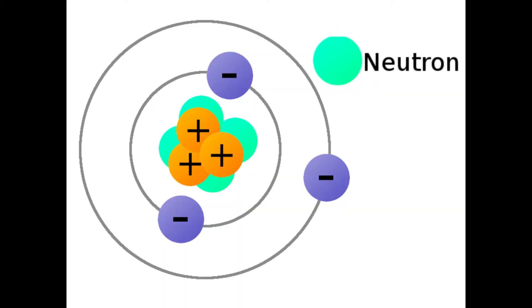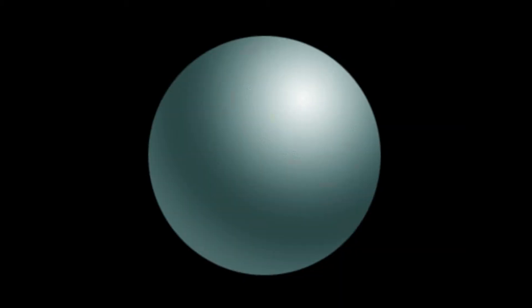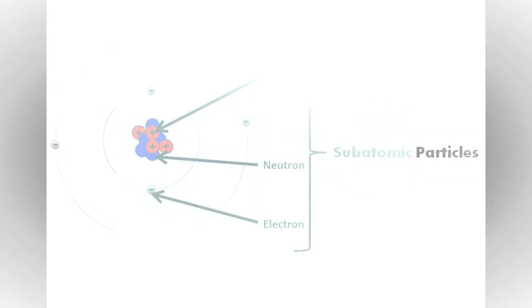They are protons, neutrons, and electrons. These particles inside of the atom are referred to as subatomic particles.